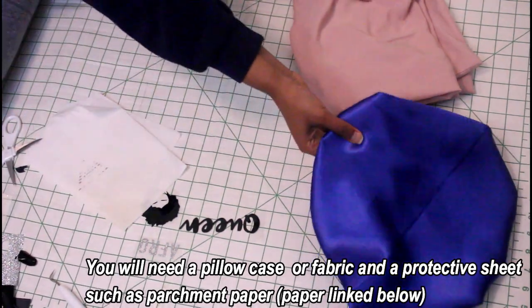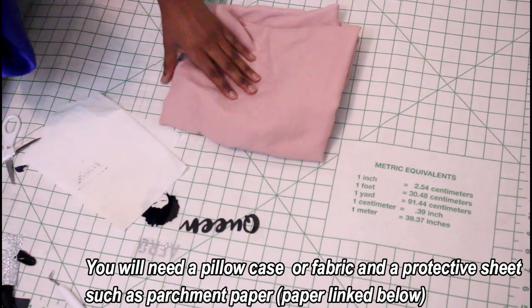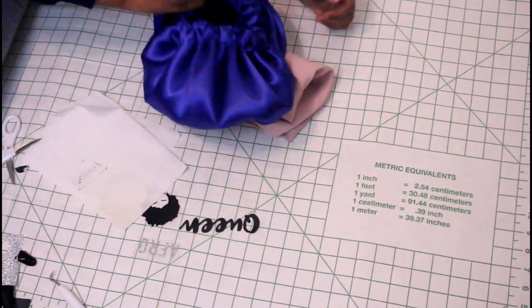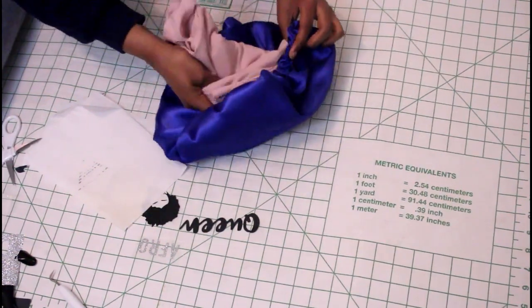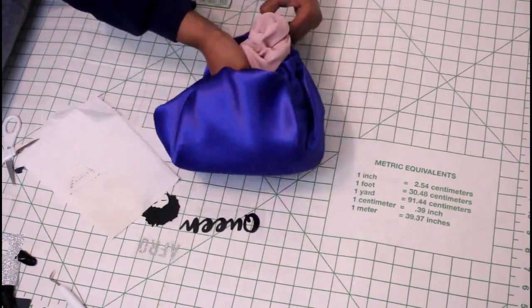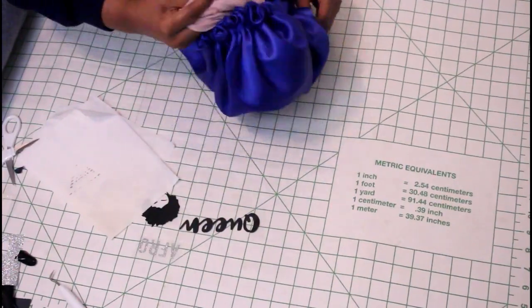As noted on the screen, you will need a pillowcase or a piece of fabric and a protective sheet such as parchment paper. And you will also need an iron. Insert the pillowcase like so, and this is so that you can have a flat, even surface when you're applying your heat transfer vinyl.